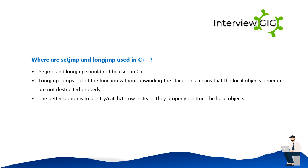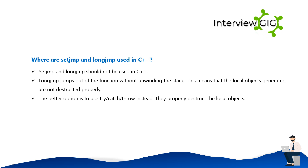Where are setjmp and longjmp used in C++? setjmp and longjmp should not be used in C++. longjmp jumps out of a function without unwinding the stack, meaning local objects are not destructed properly. The better option is to use try/catch/throw instead, as they properly destruct local objects.